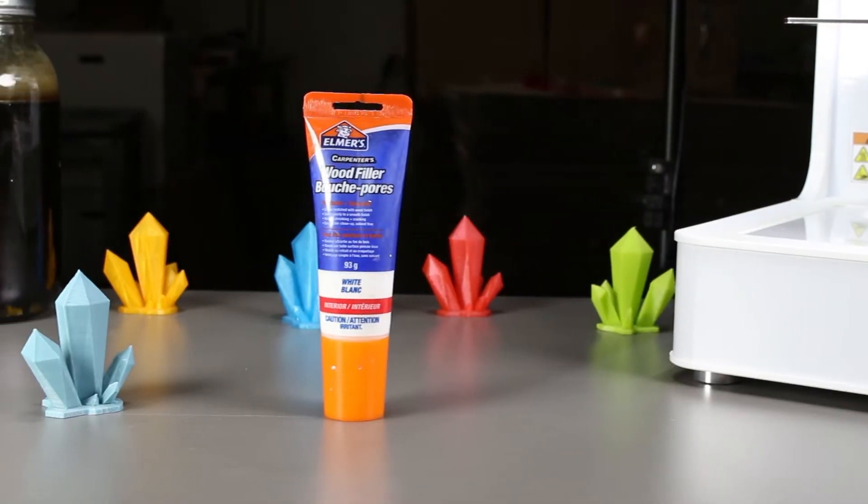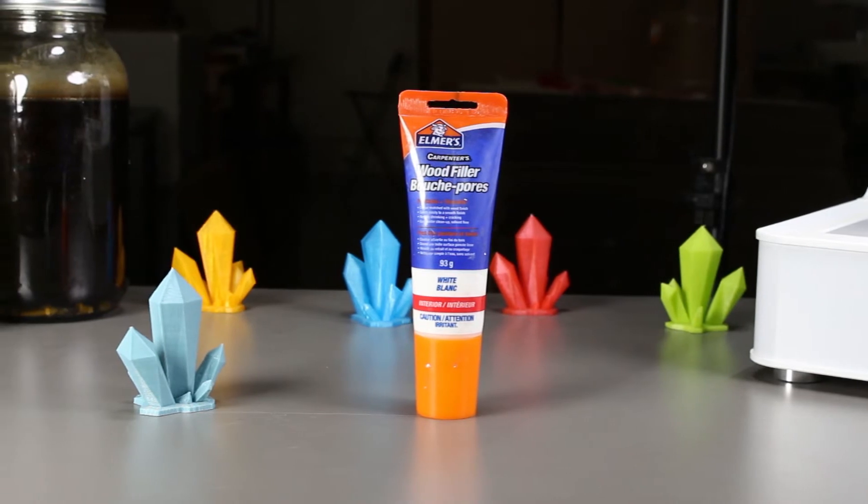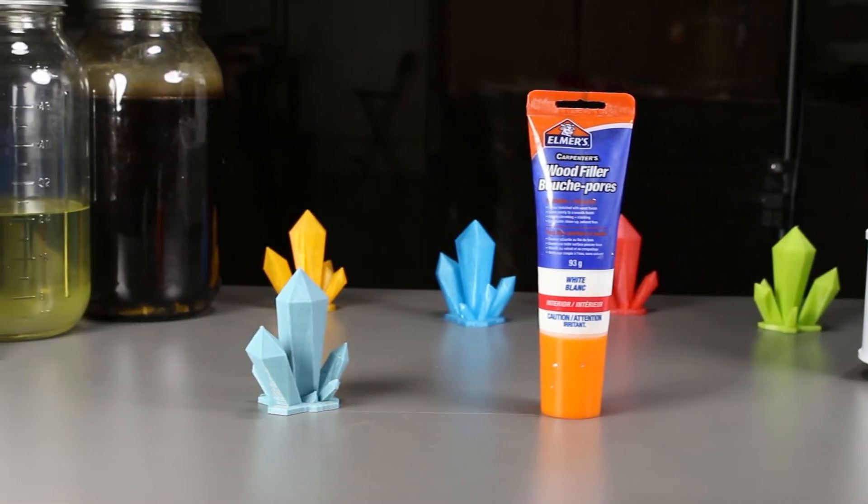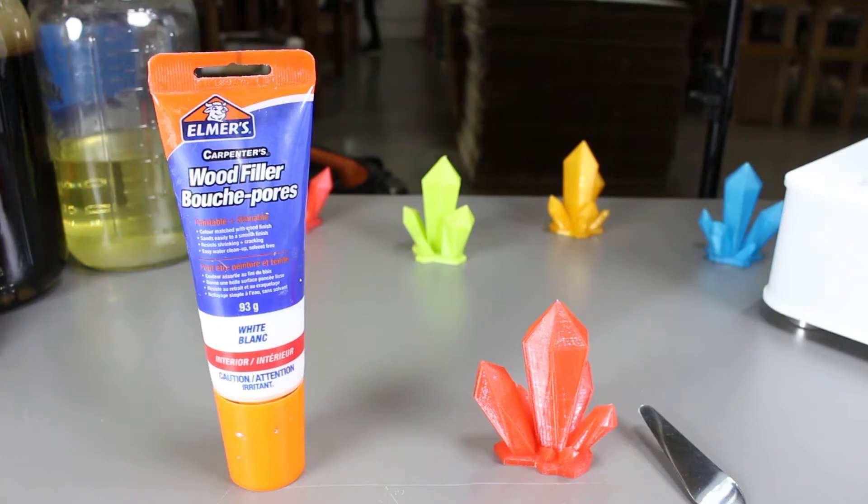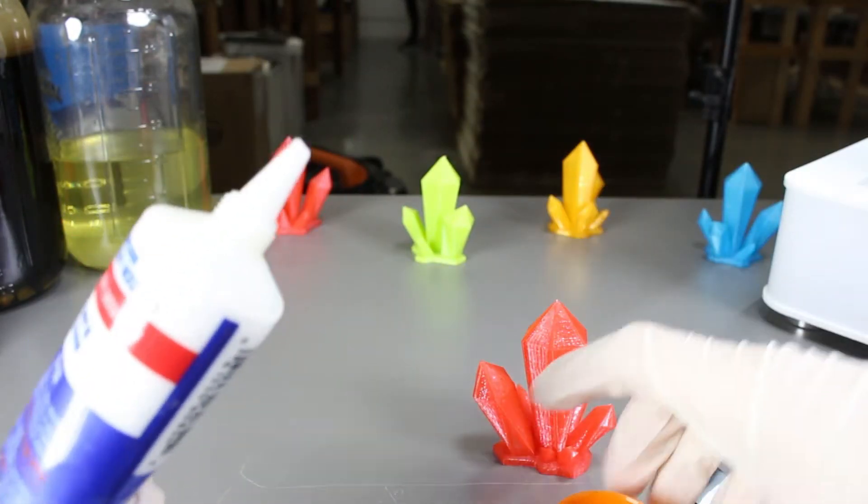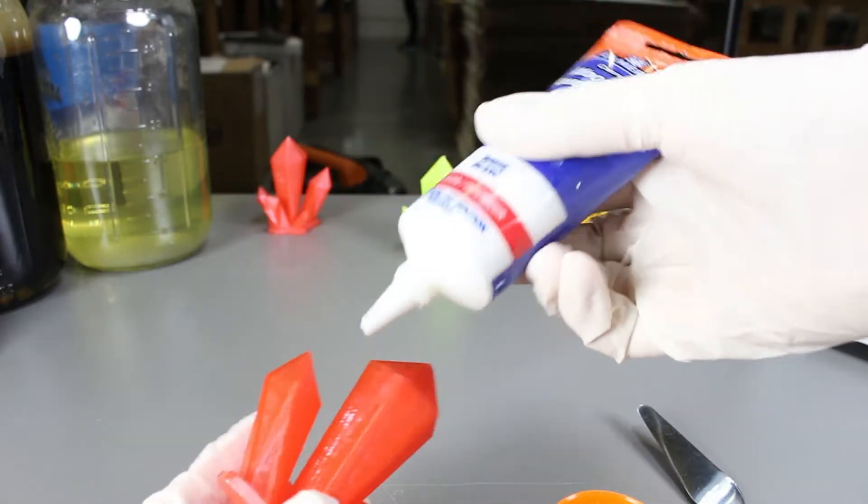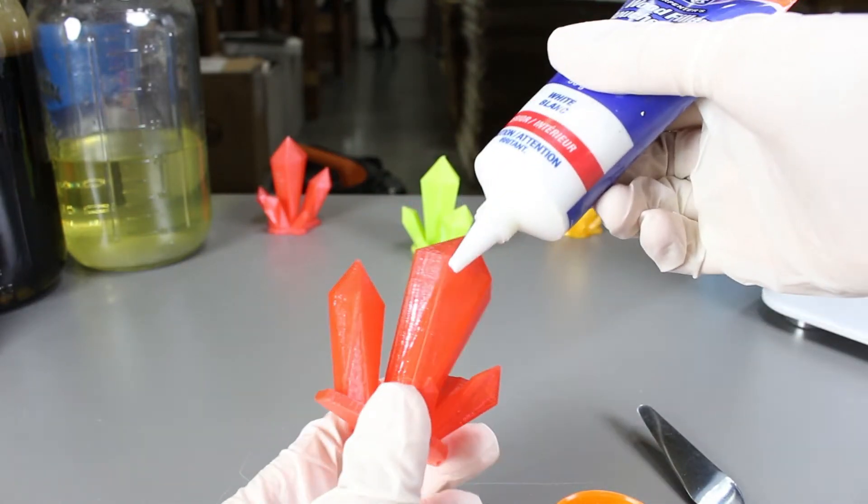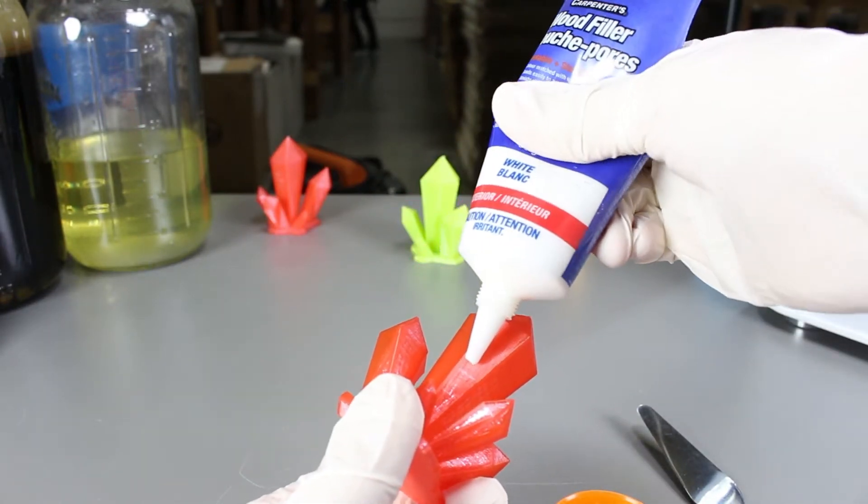So let's find out how well this goes along with PLA. The model that we have here is printed with Tinkerine 1.75mm PLA filament. According to the instructions on the wood filler, I'm supposed to apply it and then wait 15 minutes for it to dry and then we can sand it down. So to start, we will apply the wood filler onto the model.